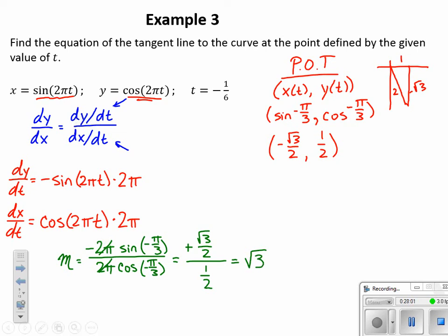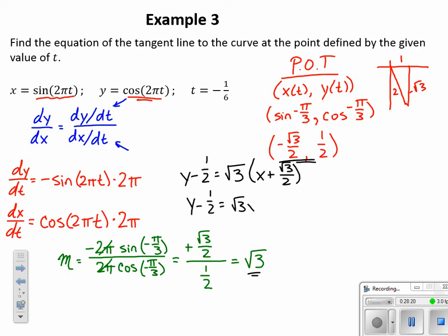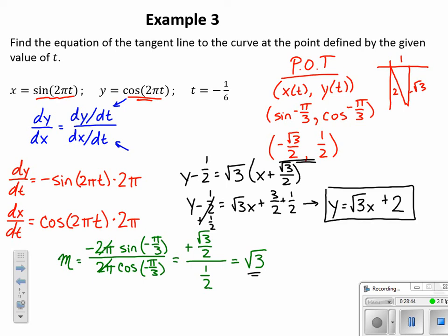Now to write the tangent line equation — back to algebra 1. We have our slope root 3 and our point (negative root 3 over 2, one half). Using point-slope form: y minus y1 equals m times (x minus x1). Distributing root 3 and simplifying: root 3 times root 3 over 2 becomes 3/2, then adding 1/2 to both sides. Final answer: y equals root 3 · x plus 2. As long as we find the point of tangency and are careful with the parametric derivative, it's manageable.